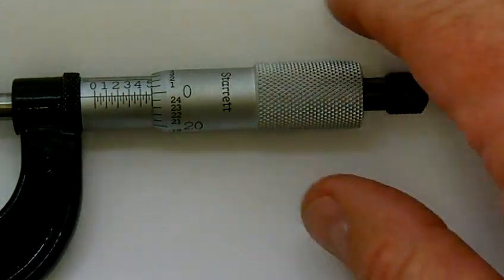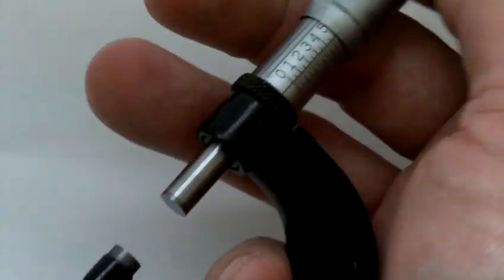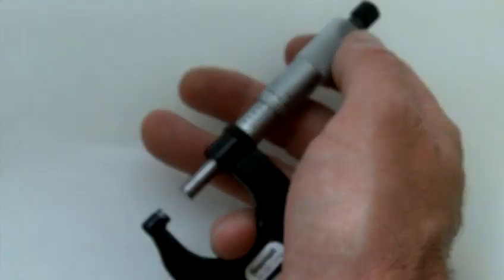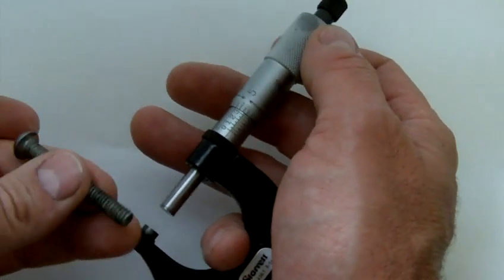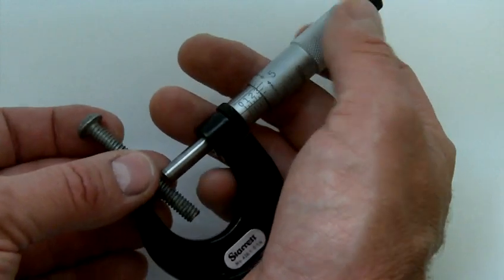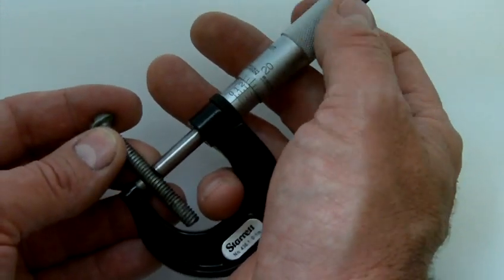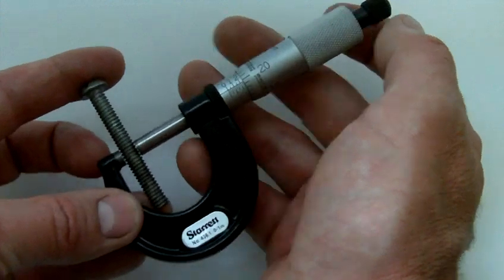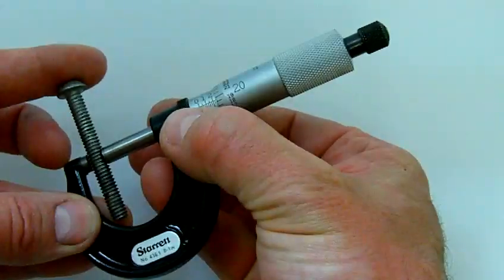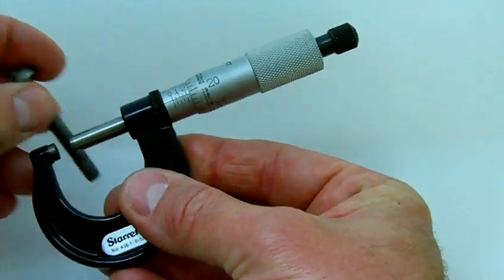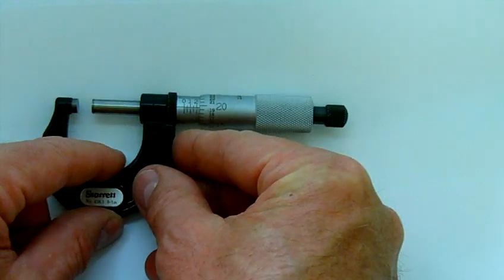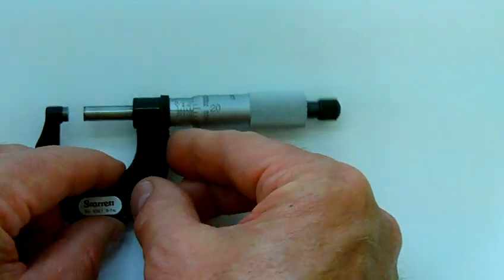Let's try another one. So we have this screw and we just want to measure the outside diameter of it. Again, we're going to bring the anvil and the spindle down so it contacts the screw, and then we're just going to move the ratchet stop a couple of clicks and lock it. We'll pull the part out being measured and we'll check the measurement. And again we'll zoom in on this.